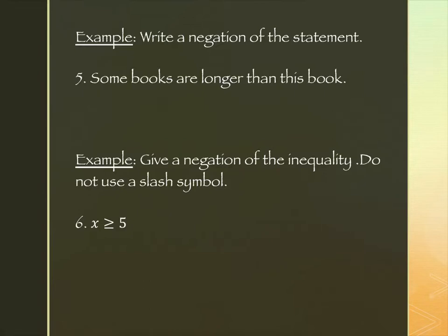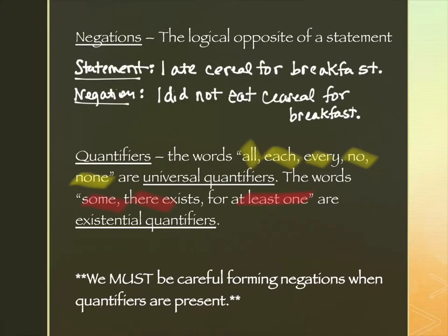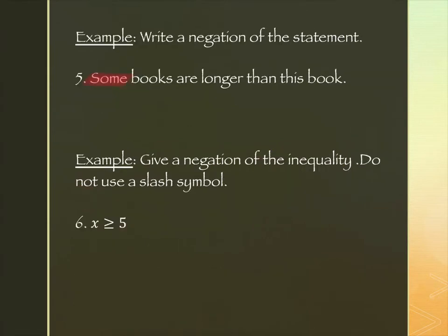What is the quantifier in this statement? "Some" — that's an existential quantifier. To create the negation, I need to change it into a universal quantifier. I can change it from "some" into "no" or "none," or into "all" — so either "no books" or "all books" are my two options.